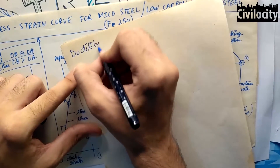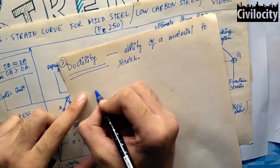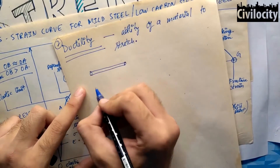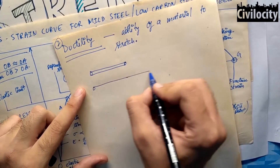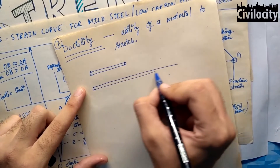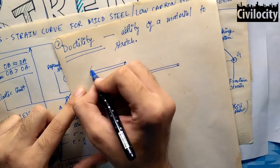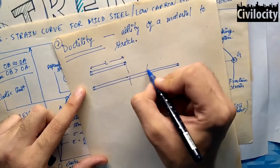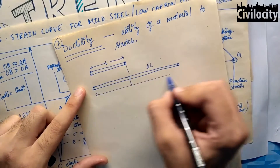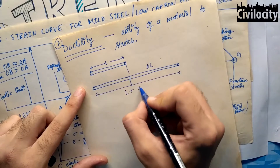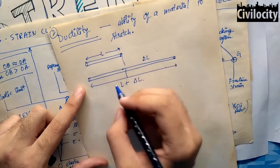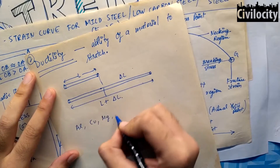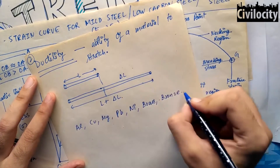Our next topic is ductility — the ability of a material to stretch. While elasticity means a material stretches and returns to the same position, ductility means the material can be stretched further and further. The mild steel curve shows it can be very ductile with a rupture point much later. Examples of ductile materials include aluminum, copper, manganese, lead, nickel, brass, and bronze.